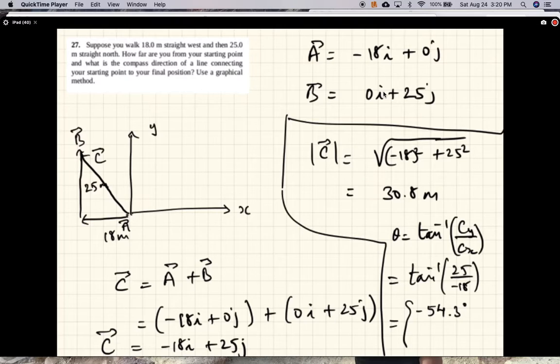Minus 54.3 degrees is the vector in this direction. Well, that's not our solution. Our solution is 125.7 degrees.